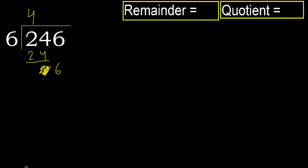Eliminate 0 on this side. 6. 6 multiplied by 2 is 12, which is greater. Multiply by 1 — 6 is not greater. Subtract. 0. Next.